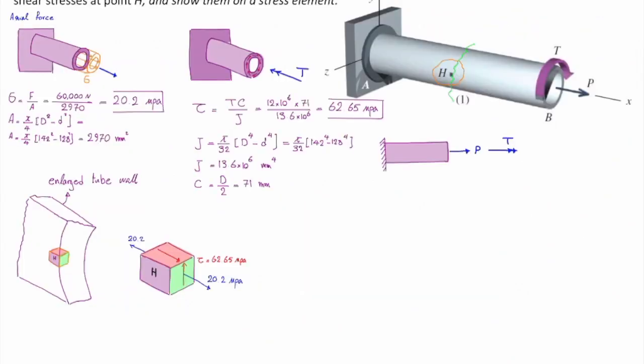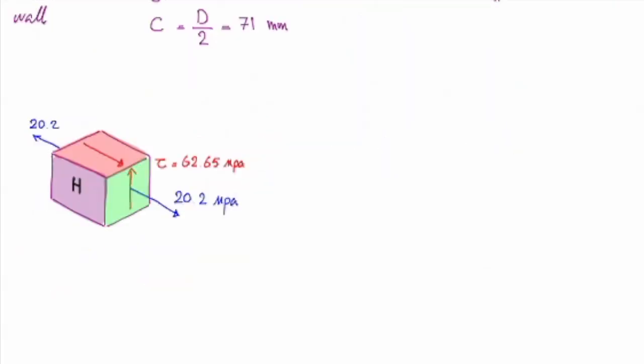We prefer to work with two-dimensional stress elements because those are easier to work with. How can I convert this three-dimensional stress element into two-dimensional stress element? I can simply look at this from the purple side. If you look at that element from the free surface, you would see this element.